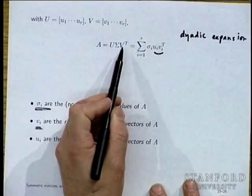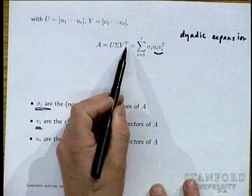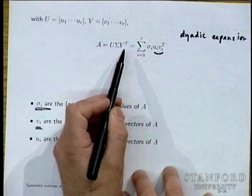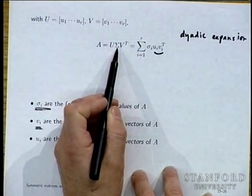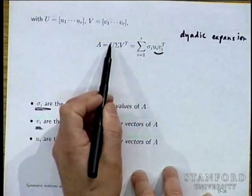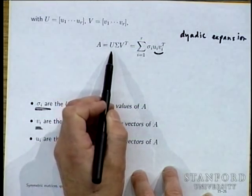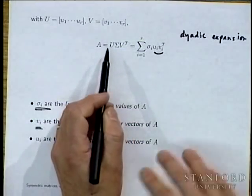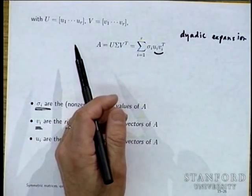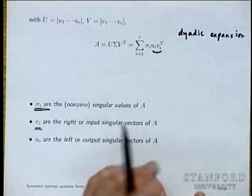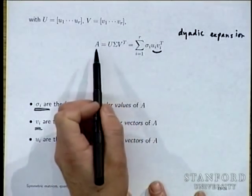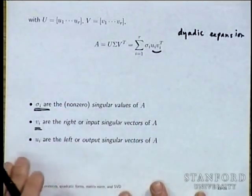When you form Ax = U Σ V^T x, the first thing you do is multiply by V^T x — that's expanding x in the V_i basis. Then you scale, and then you send the output along the U_i basis. So V is associated with input and U with output.